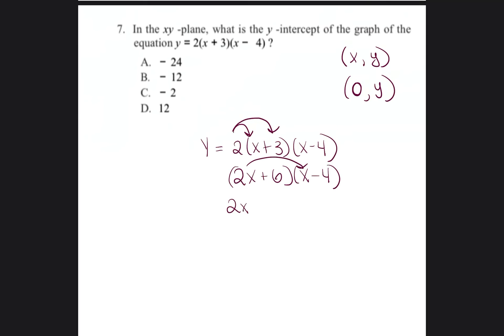2x times x would be 2x squared. 2x times negative 4 is negative 8x. Then 6 times x minus 24. We're going to combine like terms. So it would be 2x squared minus 2x minus 24 equals y.